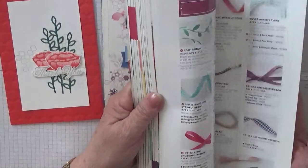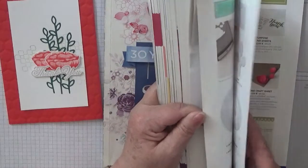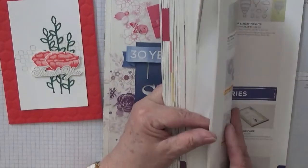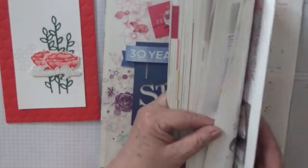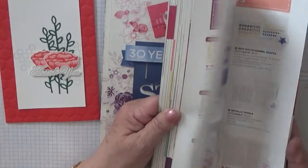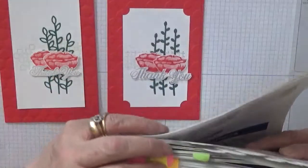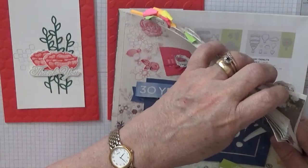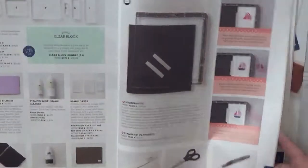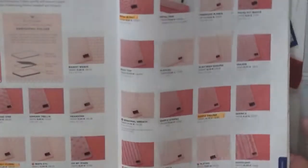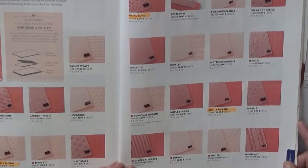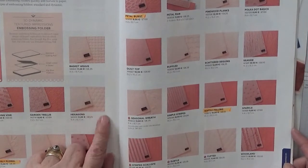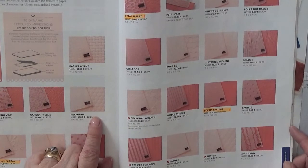Let's see, there's embossing folders. You can tell I don't buy embossing folders and I don't know where they are. This embossing folder was the hexagon embossing folder, a 3D dynamic textured impression folder, that's what that was.